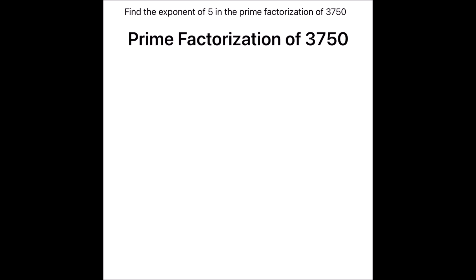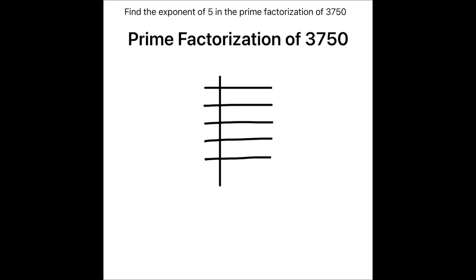For this we are first going to prime factorize the number 3750. We are going to use the prime factorization method. We will write the number and start dividing it using prime numbers. As this is an even number, it is fully divisible by 2.